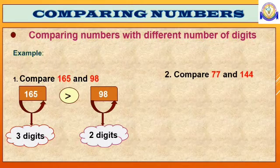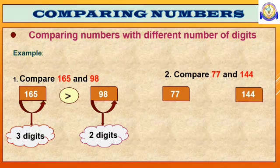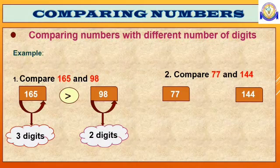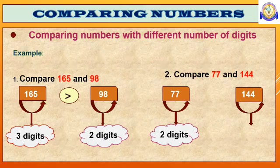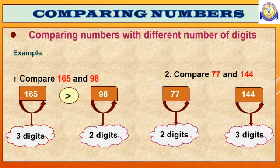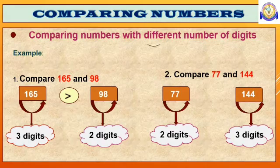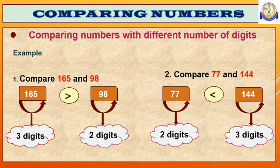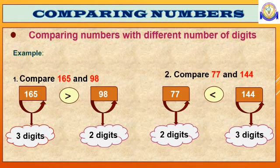Check out one more example. That is 77 and 144. 77 has 2 digits and 144 has 3 digits. So, which number has more digits? 144. So, 144 is greater than 77.